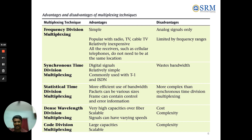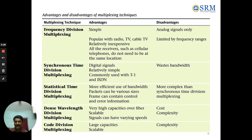Dense Wavelength Division Multiplexing has a very high fiber capacity, is scalable, and signals can have varying speeds. However, the drawback is cost and complexity. The last technique, Code Division Multiplexing, works on large capacities and is also scalable, but the disadvantage is complexity. These are the advantages and disadvantages of the various multiplexing techniques.